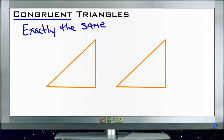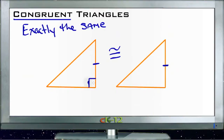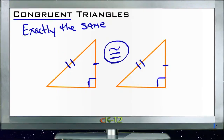Congruent means exactly the same. If you have two triangles identified as congruent with this symbol, then you can specifically say that corresponding sides are also congruent. So the side on the right of the right angle on both triangles would be the same, and the side opposite the right angle on both triangles would also be the same.